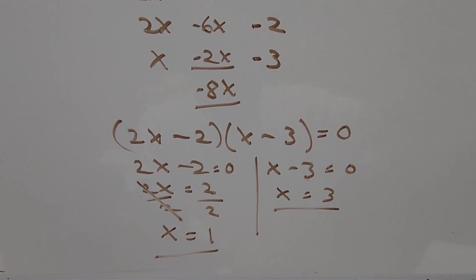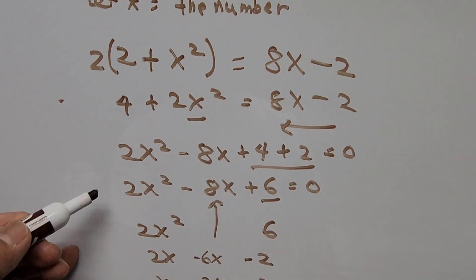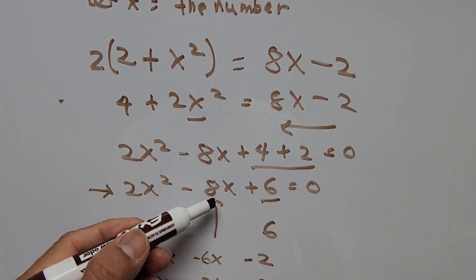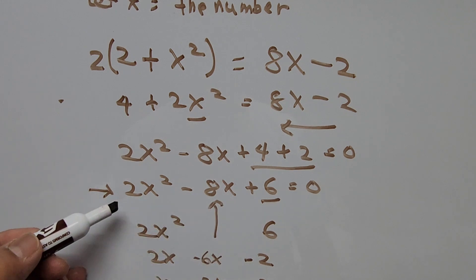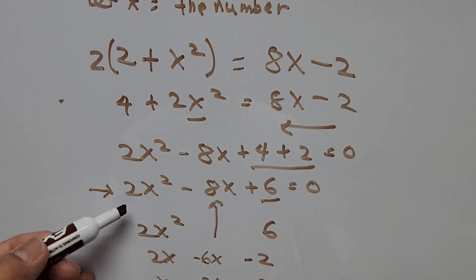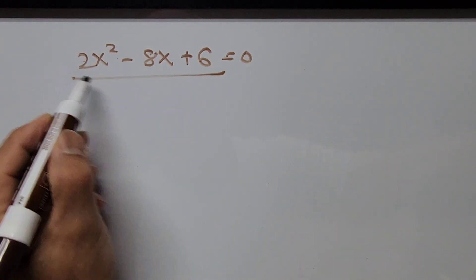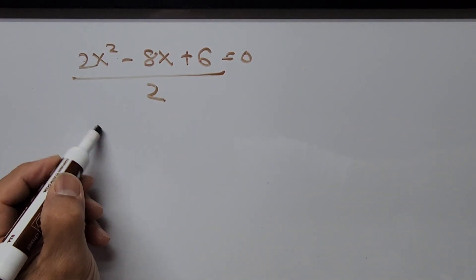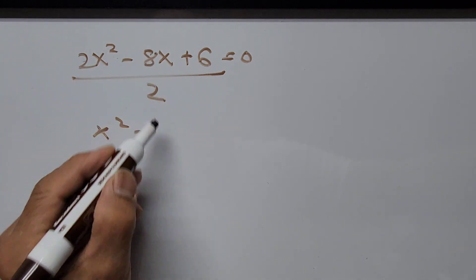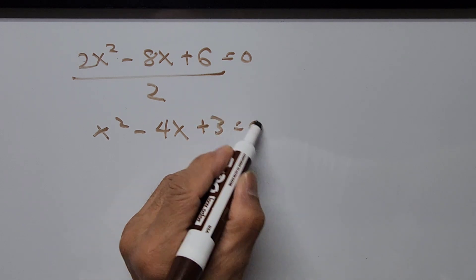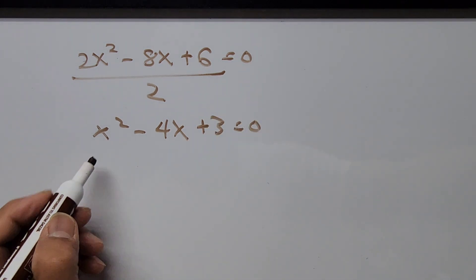There's another way to factor since the leading coefficient is not 1 but 2. Going back to our equation, notice that all coefficients — 2, 8, and 6 — are even numbers. If we divide the entire equation by 2, we get X squared minus 4X plus 3 equals 0.